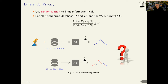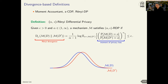There also exist other variants of differential privacy, for example the moment accountant, zero-concentrated differential privacy, and Rényi differential privacy. In this work, we use Rényi differential privacy to trace the privacy loss during training. This divergence-based definition ensures that the output distribution of our algorithm M over two neighboring datasets D and D' are close to each other, measuring the distance using divergence measures. This is expressed as a constraint on the moment of the privacy loss random variable.